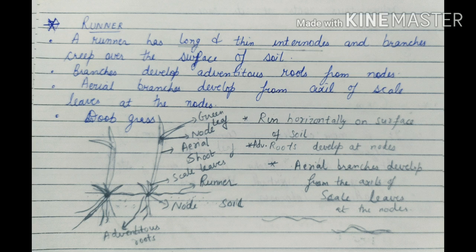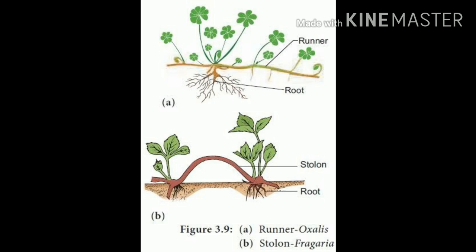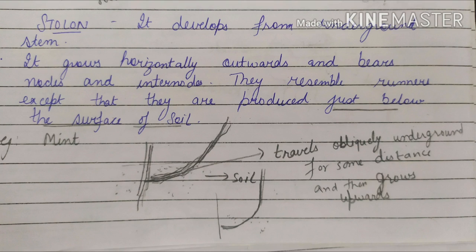As the term indicates, a runner means that this stem runs horizontally on the surface of the soil. Sub-aerial stem also has nodes and internodes, which is a characteristic feature of all stems. Adventitious roots develop at the nodes, and aerial branches also develop from the axil of the scaly leaves present at the nodes. Runners grow in all directions from the mother plant, and thus a single plant soon covers a large area — grass is an example of a runner.